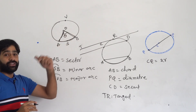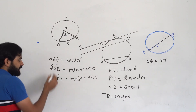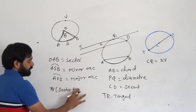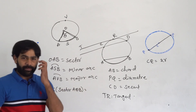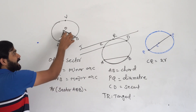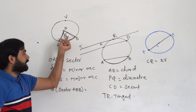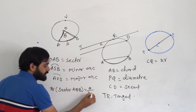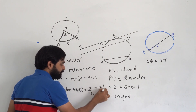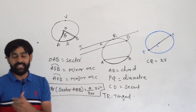This angle theta at the center helps us find the area of the sector. What is the total area of the circle? π r squared. What angle does the total circumference make at the center? 360 degrees. So out of 360, your sector makes angle theta. Therefore, the area of the sector AOB is theta over 360 times π r squared.